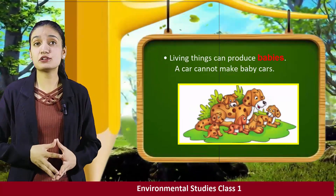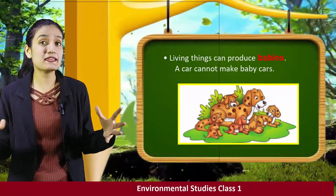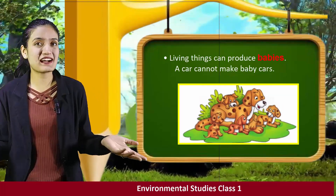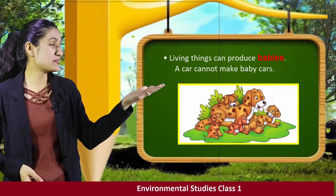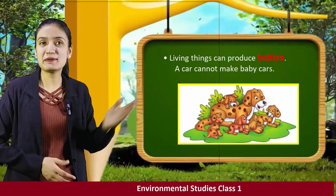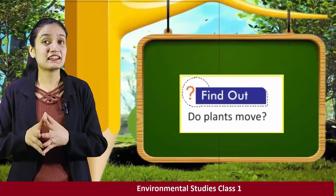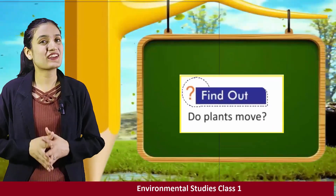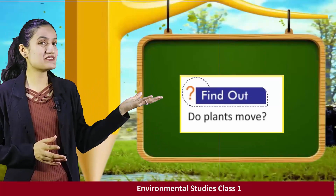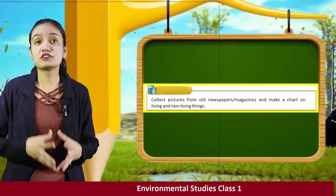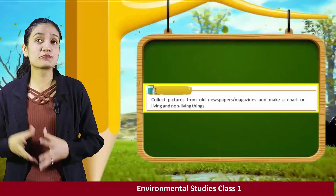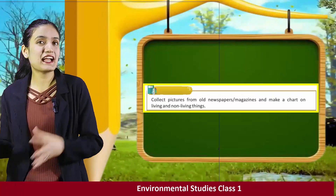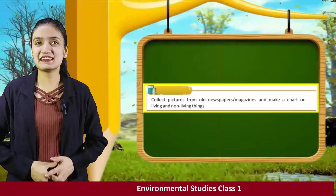Living things can produce babies. A car cannot make baby cars. Here you can see the dog and puppy. Now, find out: do plants move? Activity: collect pictures from old newspapers and magazines and make a chart on living and non-living things.